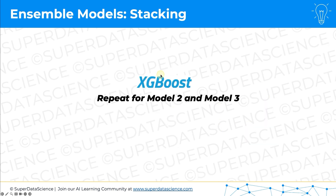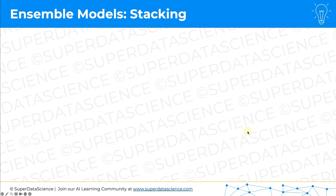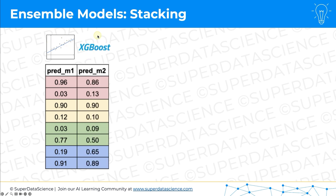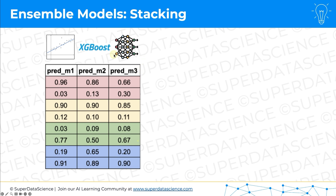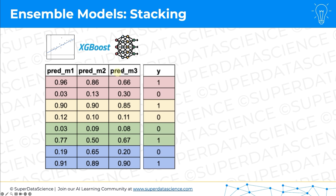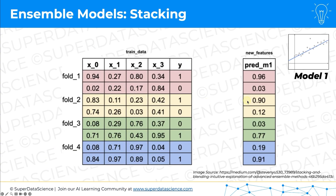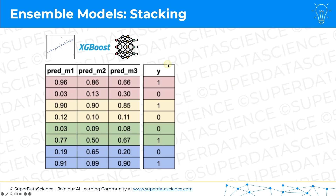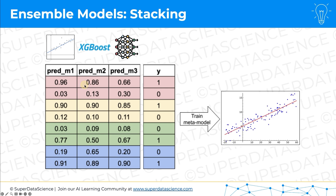We repeat the same k-fold cross-validation process for model two (XGBoost) and model three (the neural network). This gives us three columns of predicted values — one for each base model. We then add the dependent variable column once more alongside these predictions. We use this combined data — the three prediction columns plus the dependent variable — to train the meta model.